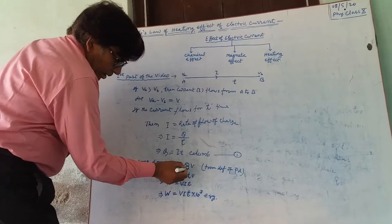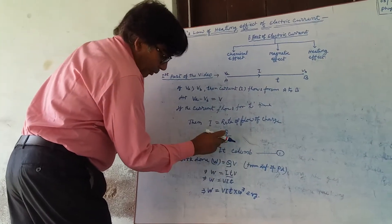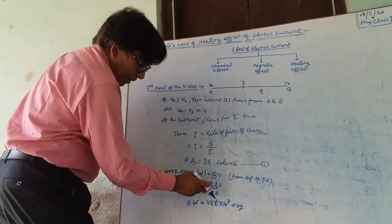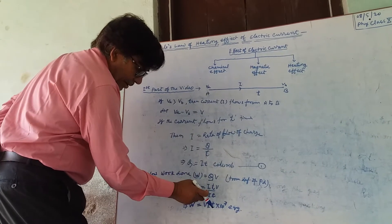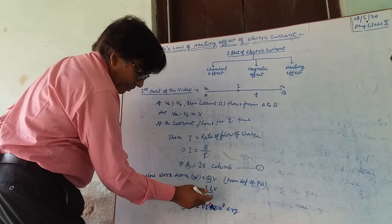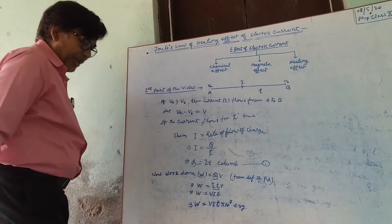Now put Q equals IT from this equation in place of Q. We get W equals VIT.